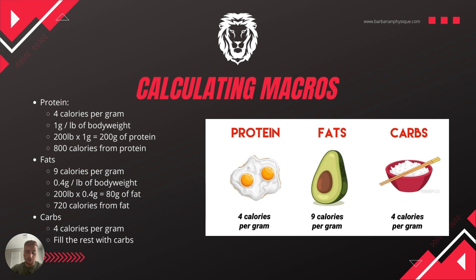Now for fats — fats have 9 calories per gram, over double that of protein and carbs, making them a more calorically dense macronutrient. You get more calories per gram compared to protein and carbs. The minimum amount of fat you should have is at least 0.4 grams per pound of body weight. Using our 200-pound example, 200 multiplied by 0.4 gives you 80 grams of fat. With 9 calories per gram, that's 720 calories coming from fat.